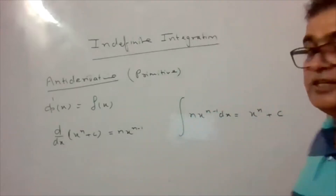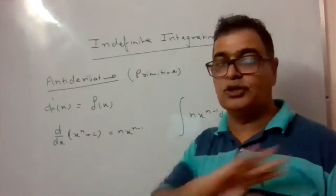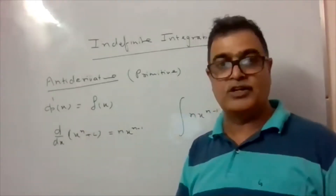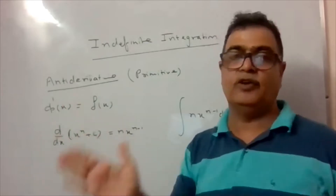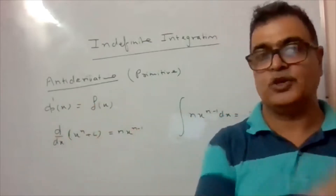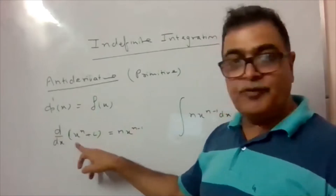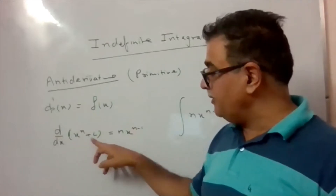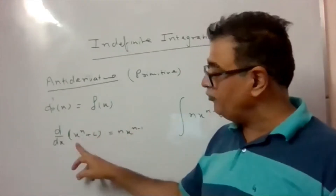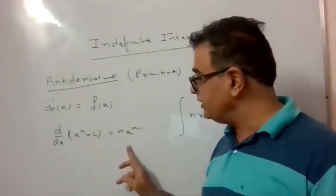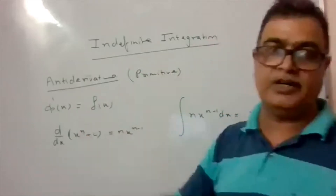That's why in indefinite integration we always add C — whatever function you take, adding that constant gives a general function. The derivative of C is zero so it never causes a problem. So the antiderivative of n·x^(n-1) is x^n + C.